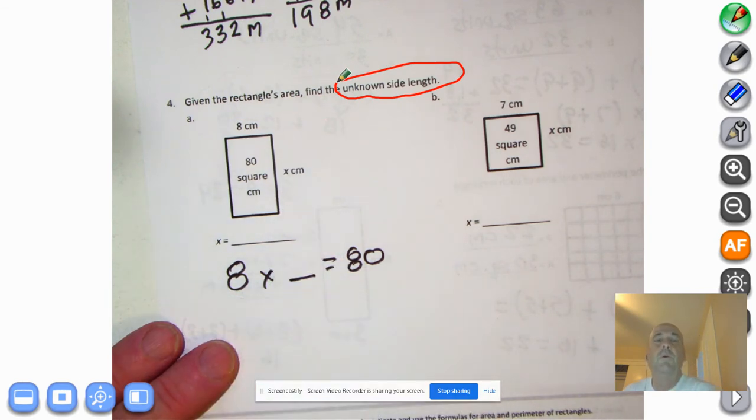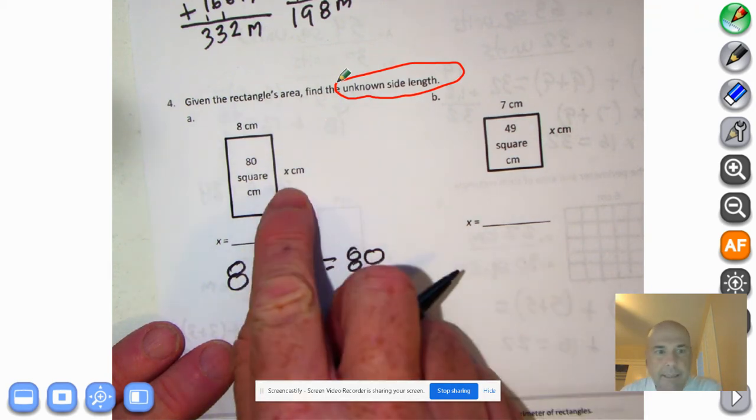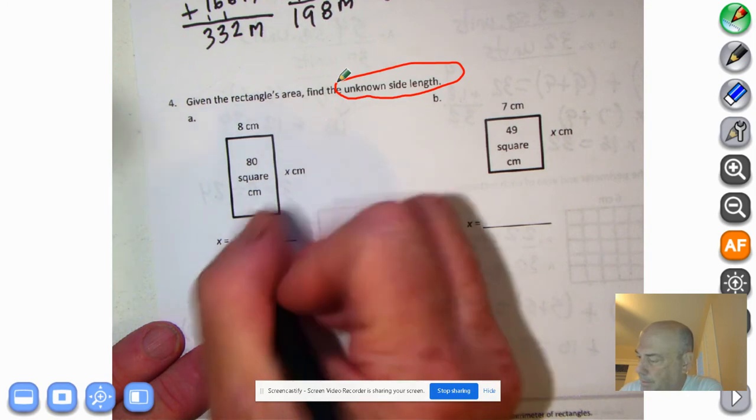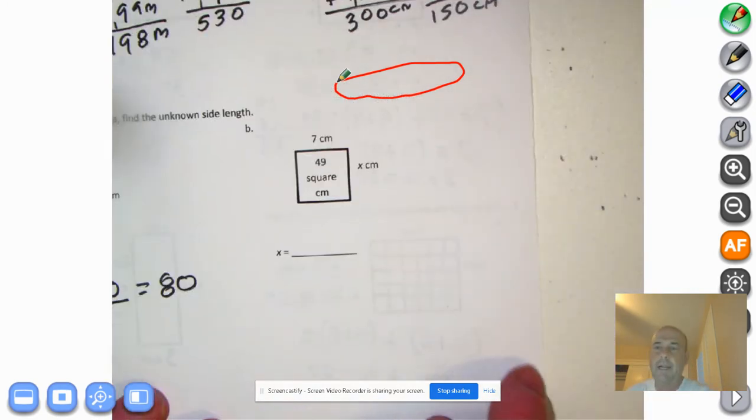So we have eight centimeters, and this is a total of 80 square centimeters. So this is how I'm going to set the problem up. Eight times a number equals 80, right? Because we're trying to find this unknown side, x. So eight times what is 80? If you said eight times 10 is 80, you're absolutely correct. So x equals 10. The variable equals 10. And there we go. Go ahead and pause the recording and try to get this one done on your own. Five, four, three, two, one.